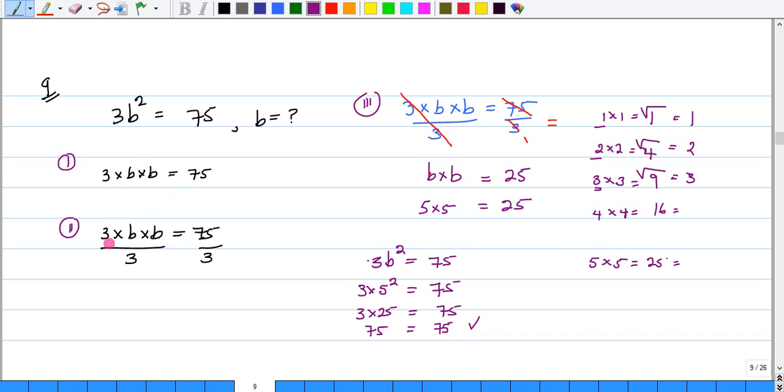So, in order to get b squared by itself, we'll need to divide the left-hand side by 3 and also the right-hand side by 3. Now, 3 will cancel 3, leaving me with b squared or b times b. And if I divide 75 by 3, I'll get 25.